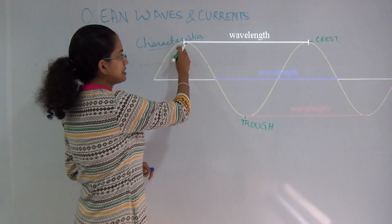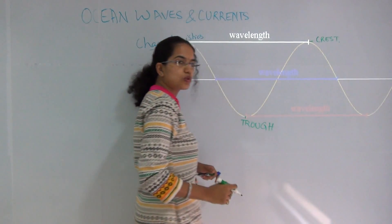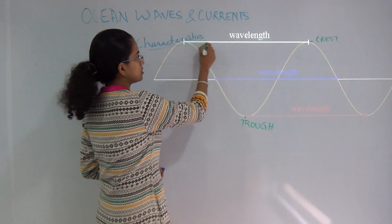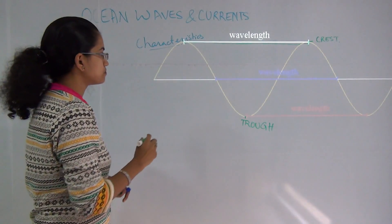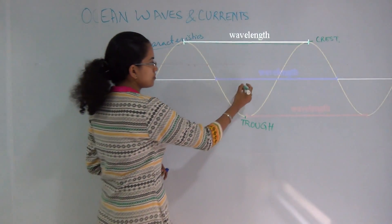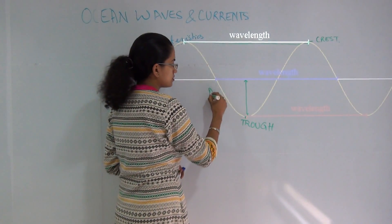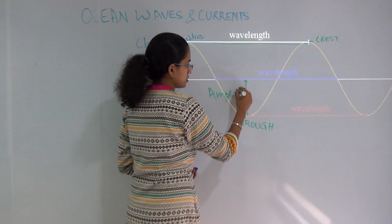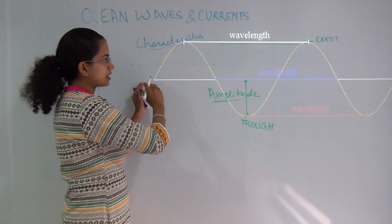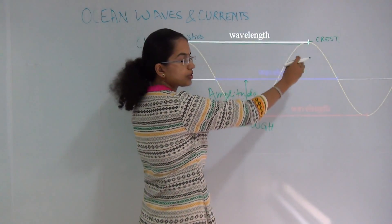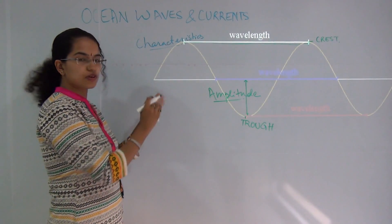The lowest point that a wave can go is known as trough. The distance between two crests or two troughs is known as wavelength. The height is known as amplitude.